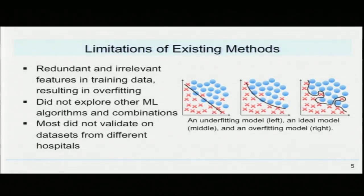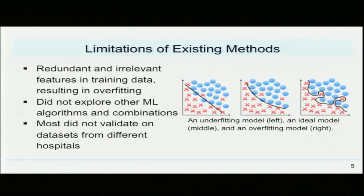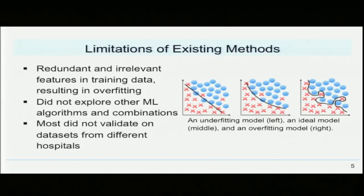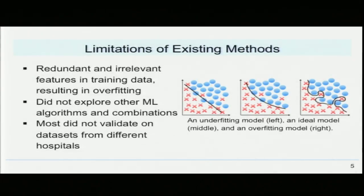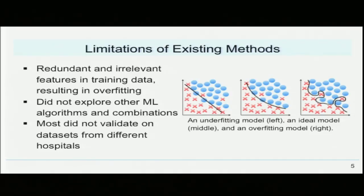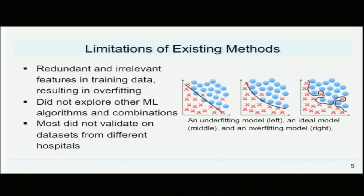While this is a strong performance, there are several limitations of existing studies. First, existing methods use redundant and often irrelevant features, resulting in over-fitting — where the model identifies the noise of the data rather than the underlying relationship. Second, many existing studies did not explore other machine learning algorithms or combinations of these algorithms. Third, most did not validate on datasets from different hospitals and hence may not generalize well.